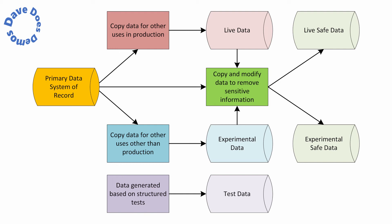The difference between live and experimental is how and where we're going to be consuming it. We might also copy and modify that data to remove sensitive information, and then call it either 'live safe data' or 'experimental safe data' — meaning regulations no longer apply, or specific regulations don't apply. You might be able to remove the GDPR requirement but still need to keep credit card information, so PCI DSS might still apply even though you've removed the personal information. There are scenarios where you might remove just one regulatory requirement.